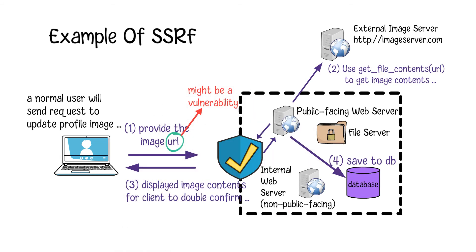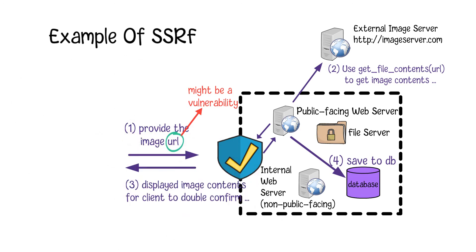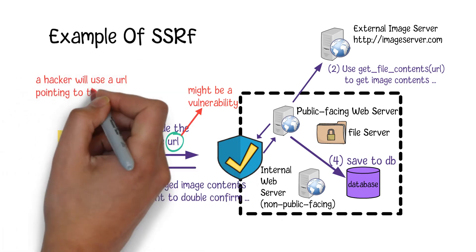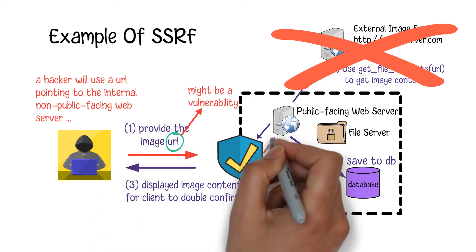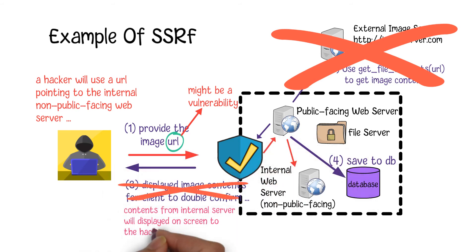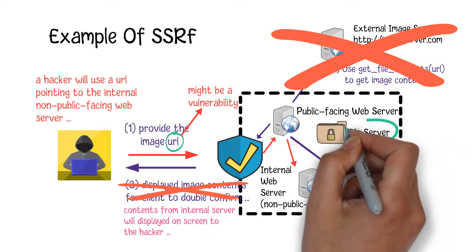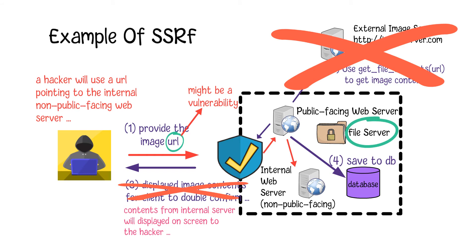Since the URL is provided by the user, there is a potential vulnerability in this workflow. When the hacker initiates the request, they may use a URL pointing to an internal, non-public-facing web server instead of an external image. When the server calls get_file_contents(url), it will return the contents from that internal server. Moreover, if the hacker uses a URL pointing to a local file server, they may easily retrieve secure credential files. The same trick can also be used for other internal resources such as FTP servers, web services, and databases.